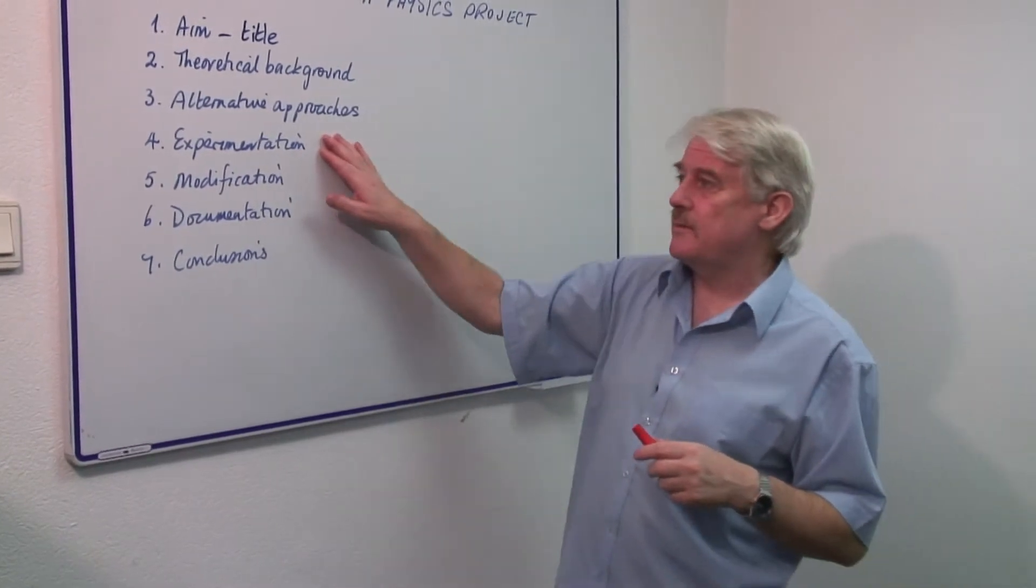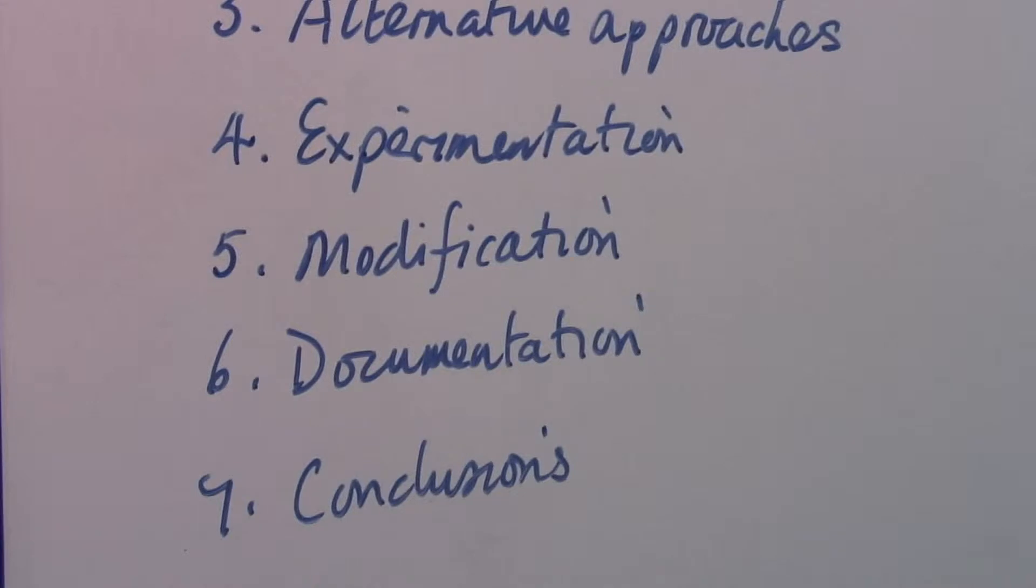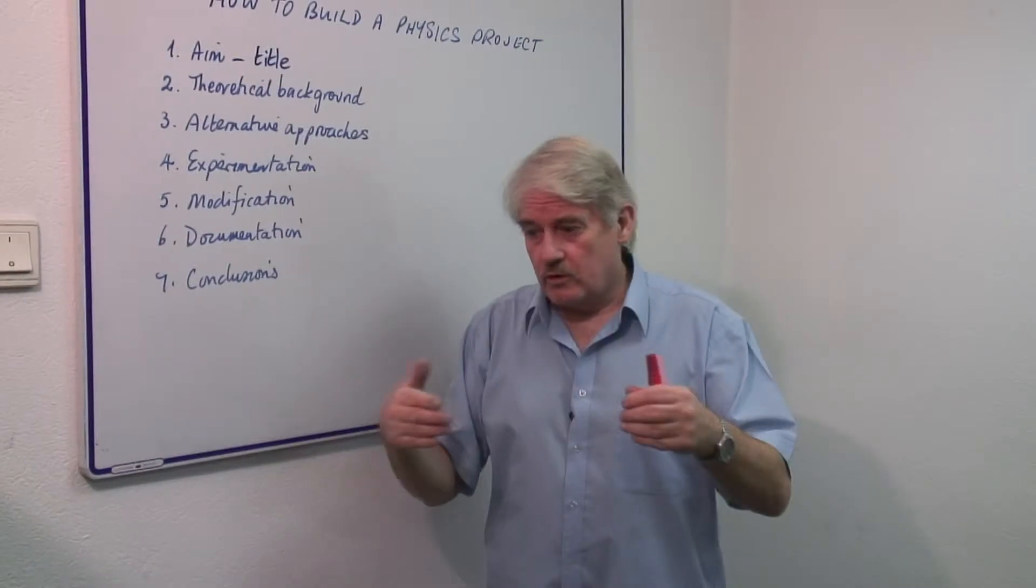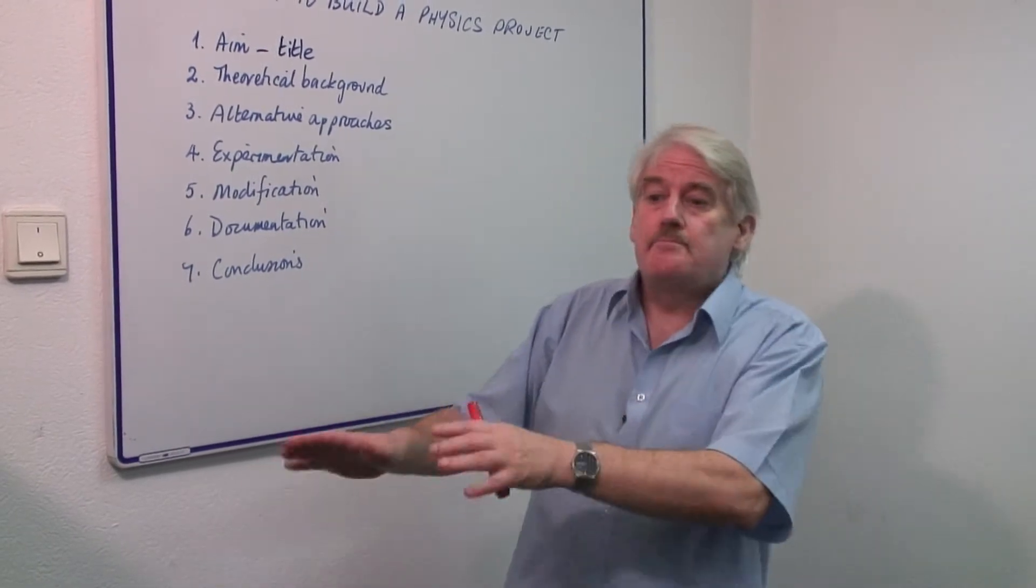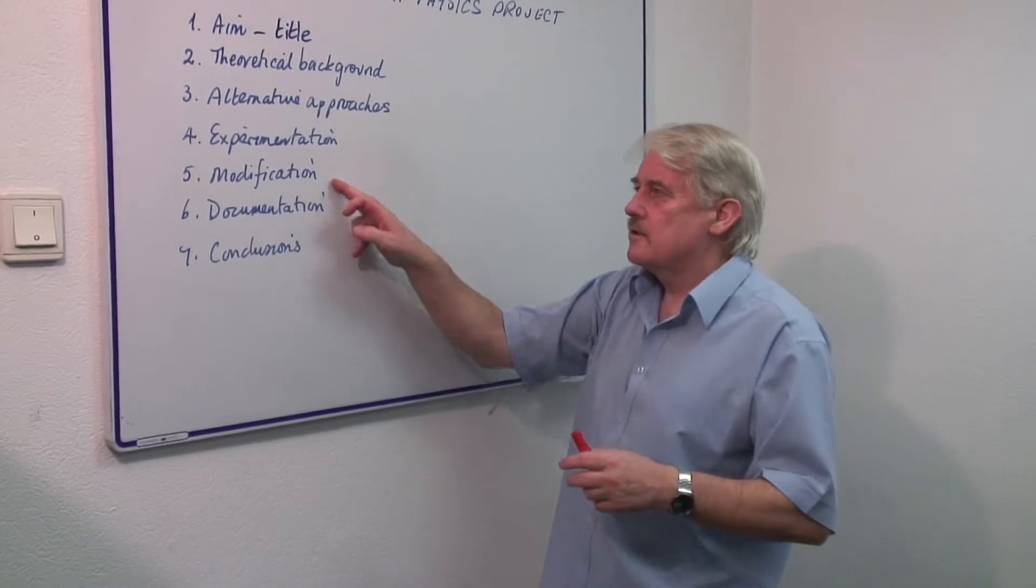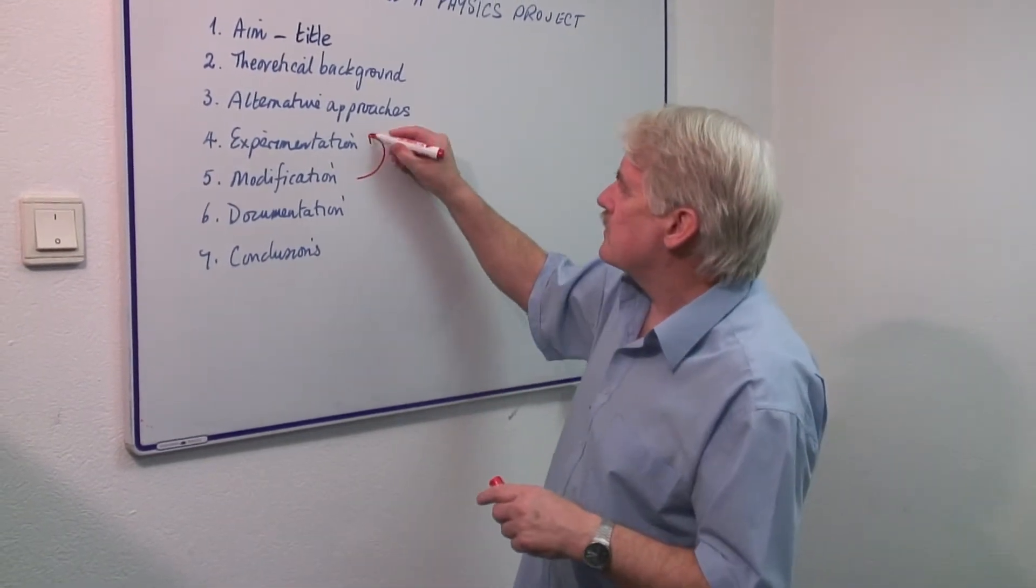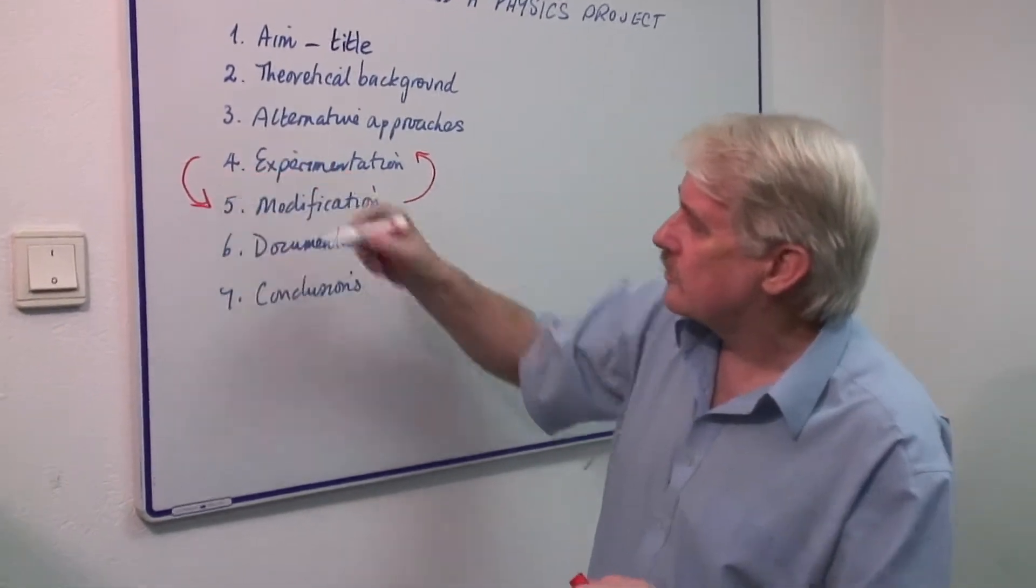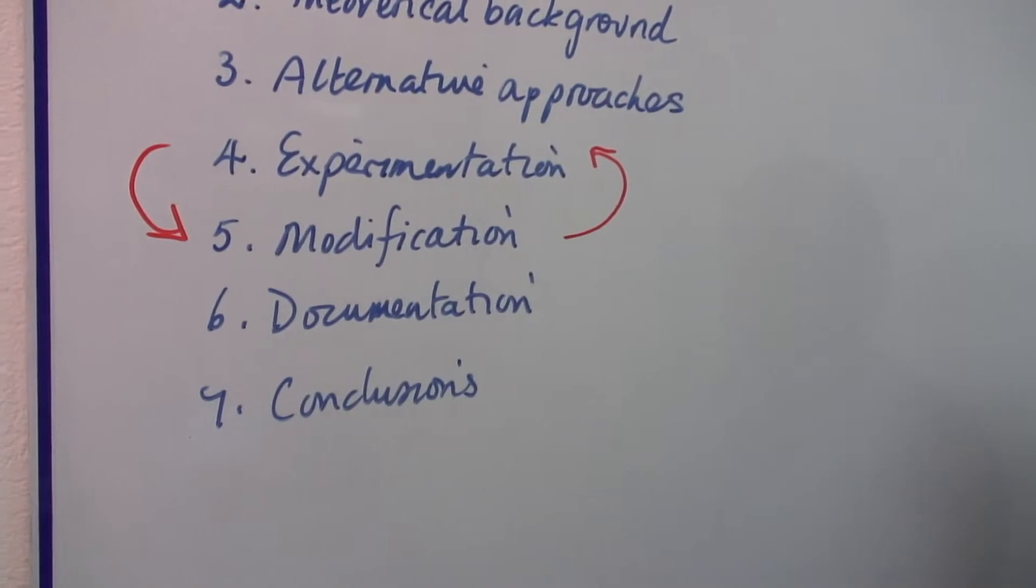Once you've done your experimentation for the first time, you'll do things which we call modifications. That is, you'll look at the experiment and you'll say, this wasn't very good, I'd better do that instead. And then modify it, repeat the experimentation. These in fact go around in a circle so that we continuously rotate between experimentation and modification.